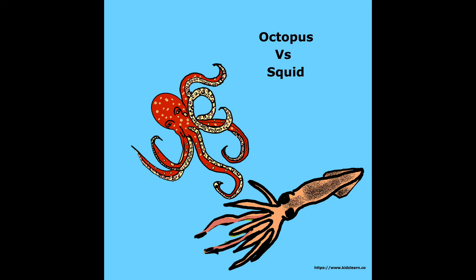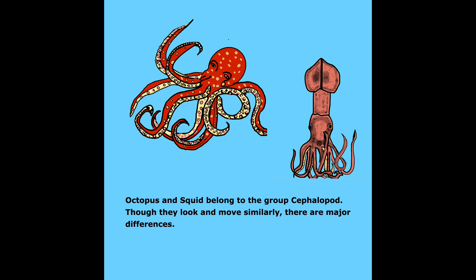Octopus vs. Squid. Octopus and squid belong to the group cephalopod. Though they look and move similarly, there are major differences.